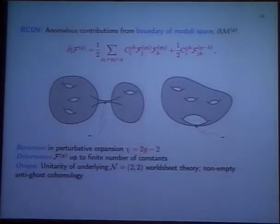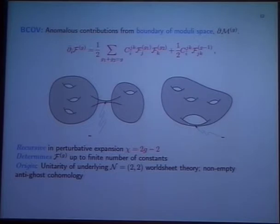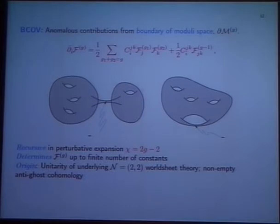What does this equation look like? It tells what the anti-holomorphic dependence is of the topological string amplitudes, and comes from the degeneration of the Riemann surface. There are two ways: you can split it into two pieces, or it can degenerate without splitting. Those are the two types of contributions. This is a recursive relation in genus order — more precisely in the Euler characteristic χ. It determines F_g up to a finite number of constants. The origin of this equation is the unitarity for the non-trivial anti-ghost cohomology.